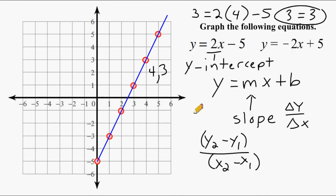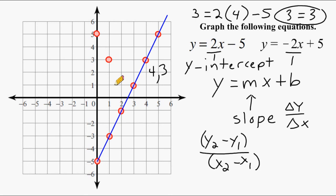Let's graph our second equation. This time we have a positive y-intercept, so we're going to locate positive 5 on the y-axis. From this point, we have to go downward 2 because our slope is negative, and then we have to go over 1. Remember, if you have a whole number, you have to put a 1 at the bottom, because that really is just the change in your y-value, but you also need a change in x-value as well. So continuing on, we go down 2 more over 1, down 2 over 1, down 2 over 1, and so on. Now that we have enough points to create a line, we're going to draw a line through these points, and we have successfully graphed the equation y equals negative 2x plus 5.